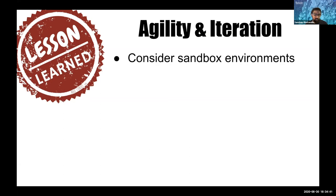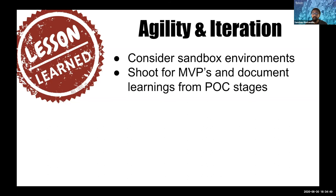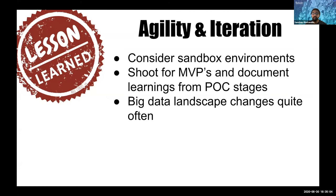Agility and iteration are very key — you can't build everything in one shot. Build sandbox environments so that your team can kick the tires in a very secure environment, then shoot for an MVP, and document all the learnings around what happened in the proof-of-concept stages. Big data landscape changes quite a bit, so refrain from putting all eggs in one basket and making things non-extensible, because there's always a new way to do things and new technologies coming up that make data processing easier.